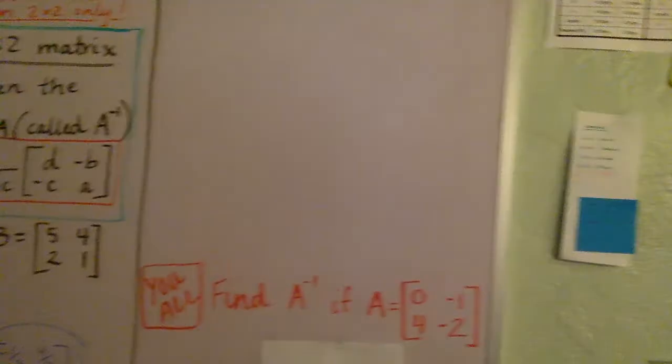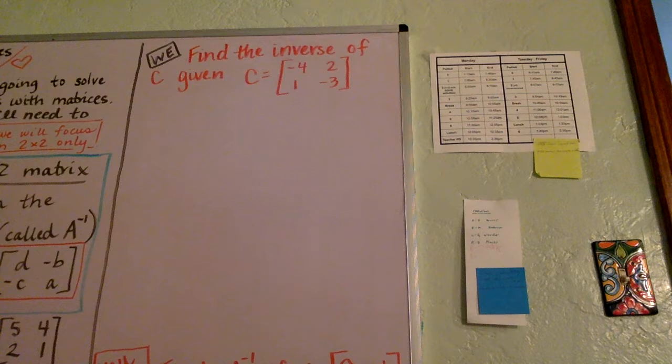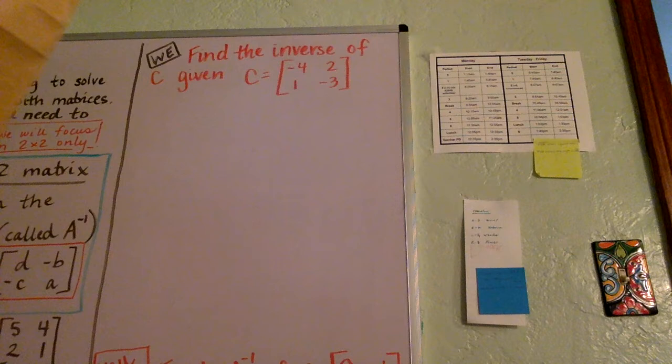All right, so let's come on over here and let's try a couple more. So here we go. Let's go with our next problem. We're given that the C matrix is negative 4, 2, 1, negative 3, and we need to find C inverse.